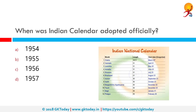When was the Indian calendar adopted officially? The national calendar of India is based on the Saka era, with Chaitra being its first month. It consists of 365 days in a normal year and was adopted from 22nd March 1957, along with the Gregorian calendar, for official purposes.